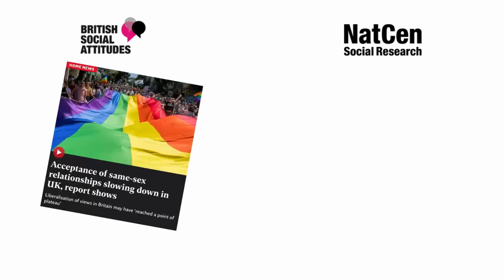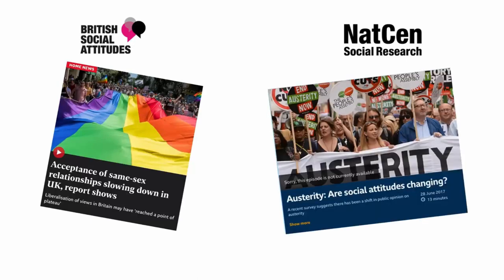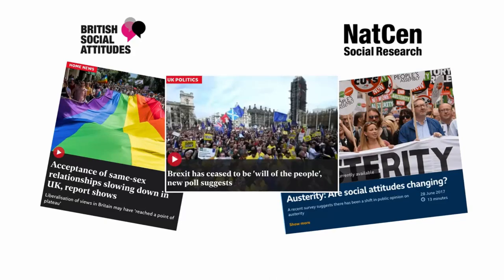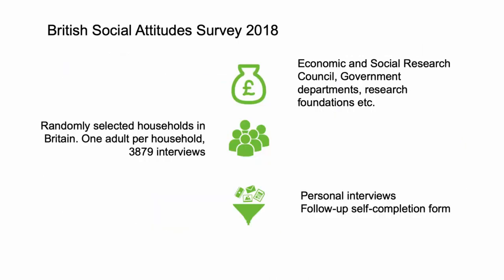For example, over the years it has tracked the acceptance of same-sex marriage, attitudes to austerity and views about Brexit. The 2018 survey was funded by a number of sponsors including the Economic and Social Research Council, Government Departments and Research Foundations. It was designed to produce information about the opinions of adults aged 18 or over in Great Britain.